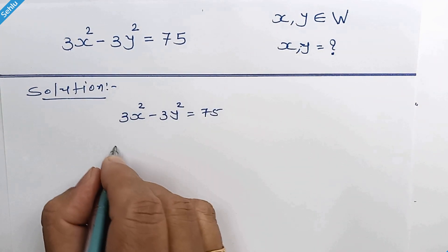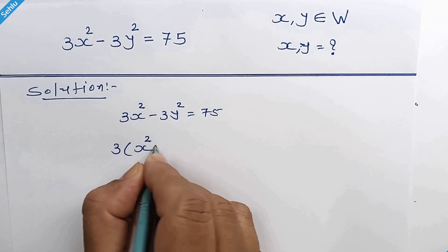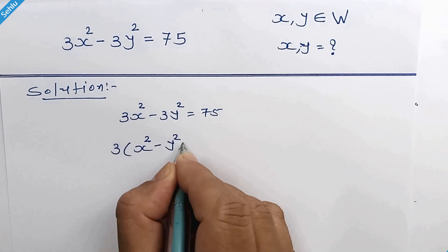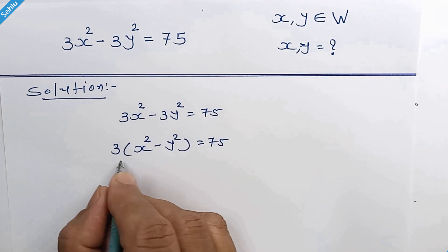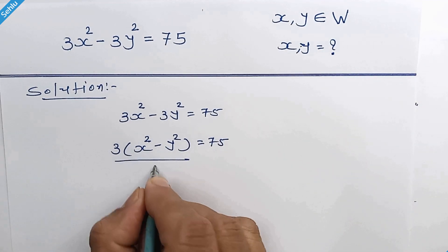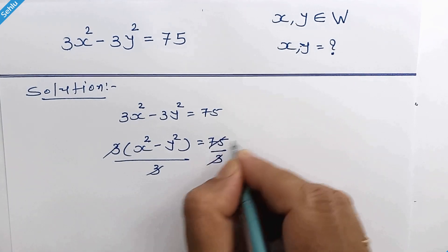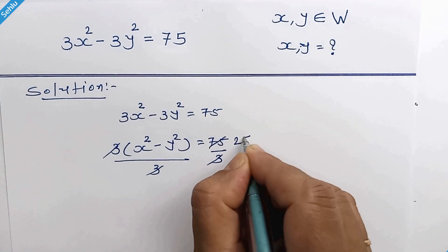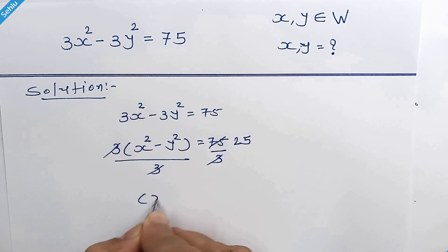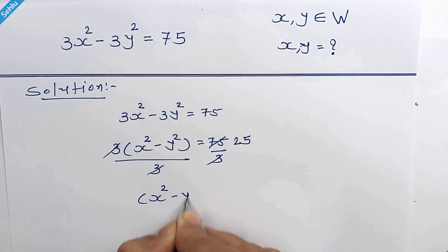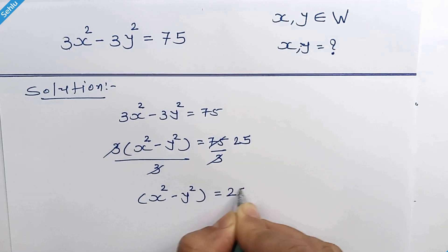Taking 3 common, divide by 3 on both sides. These 2 get cancelled out and here we have 25. So we have x squared minus y squared is equal to 25.